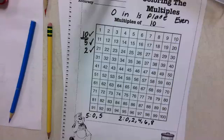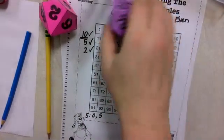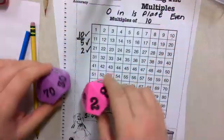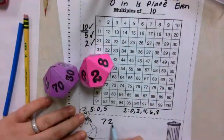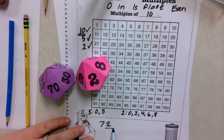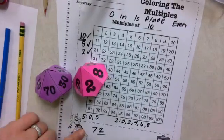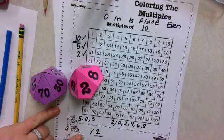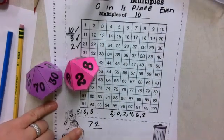So as we roll, let's say that our first number that we rolled was a 72. Is 72 a multiple of 10? It's not. Why not? The digit in the ones place isn't a 0, it's a 2. Now we can ask that question though now, is it a multiple of 2? Yes, because a digit in the ones place is a 2. Is it a multiple of 5? No, there's not a 0 or 5 in the ones place.